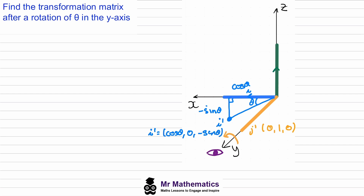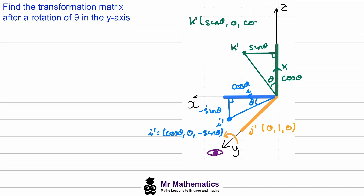When we rotate k, it's transformed to this point. The x value is the opposite length of our triangle, so this will be sine theta, and the z value will be the adjacent length, so cos theta. So the image of k will have coordinates (sine theta, 0, cos theta).